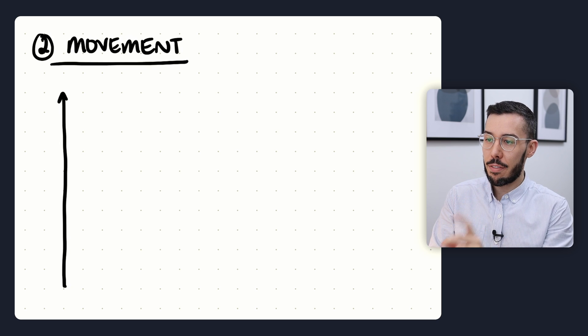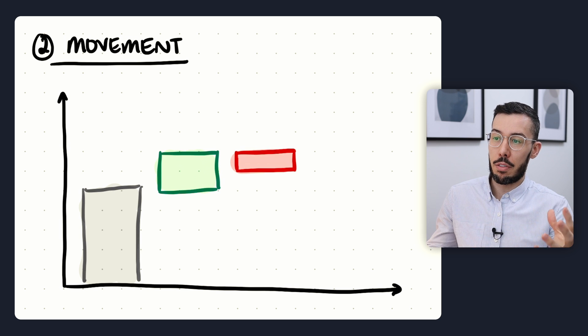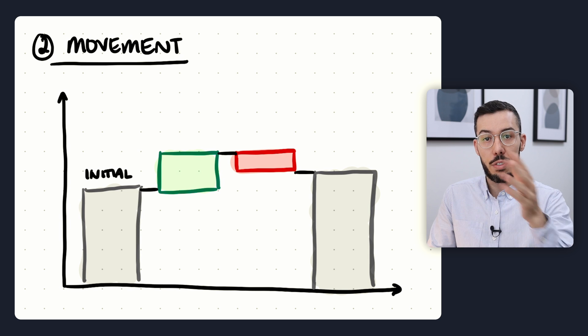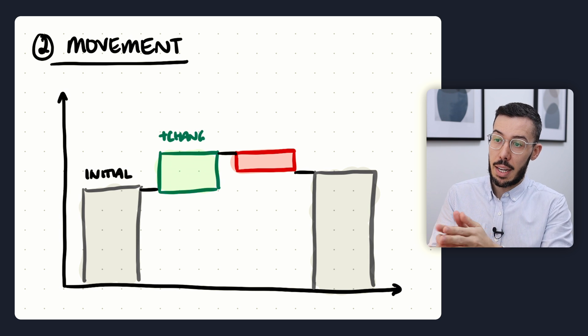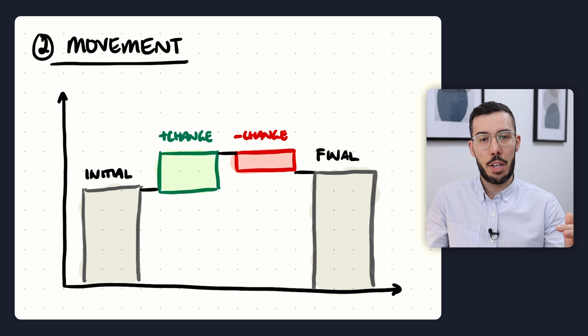The next type is the movement waterfall chart, and this is actually what waterfall charts were originally designed to do. You start with an initial value, then add movements — increases or decreases — and end up with a final value. You're essentially showing the change from an initial value to a final value. These are often used to illustrate financial metrics like net income or net interest margin for a bank, showing how that changes from year one to year two.